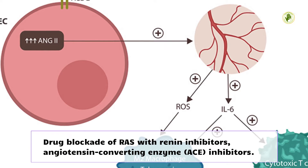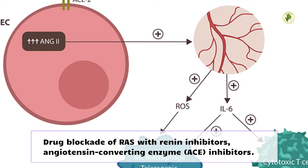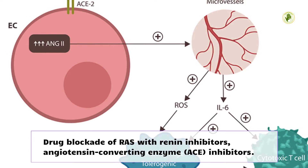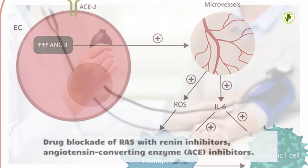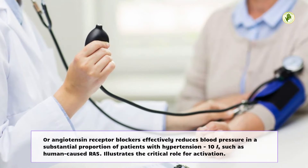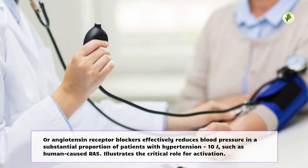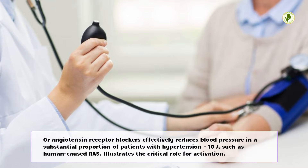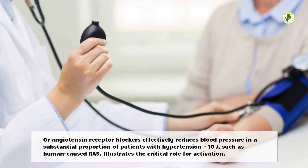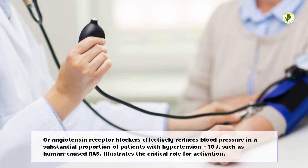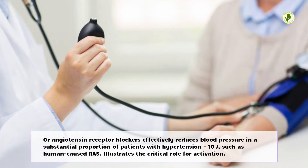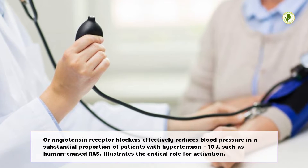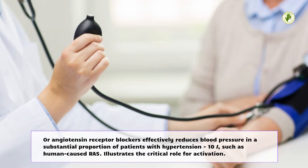Drug blockade of RAS with renin inhibitors, angiotensin-converting enzyme (ACE) inhibitors, and angiotensin receptor blockers effectively reduces blood pressure in a substantial proportion of patients with hypertension, illustrating the critical role for RAS activation.